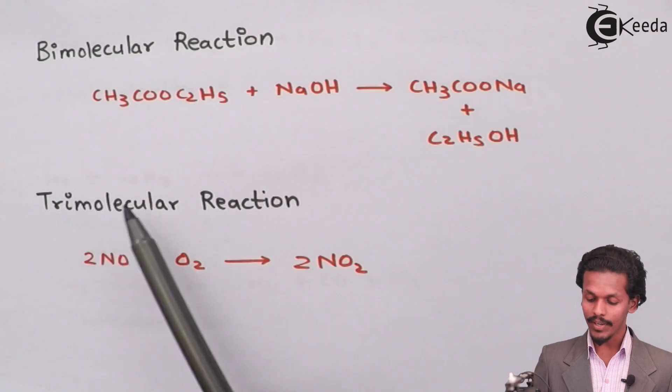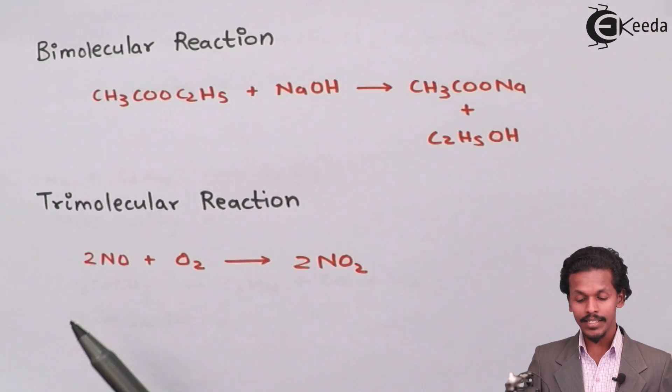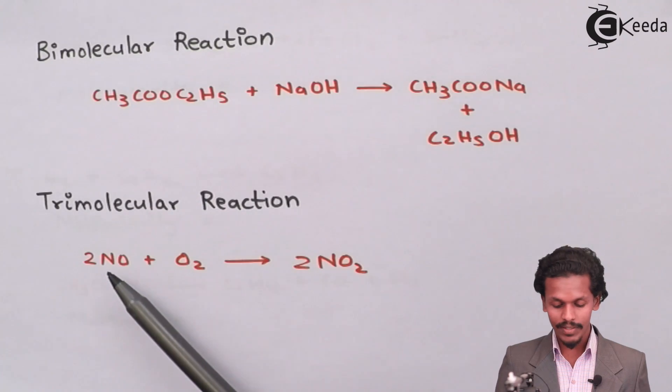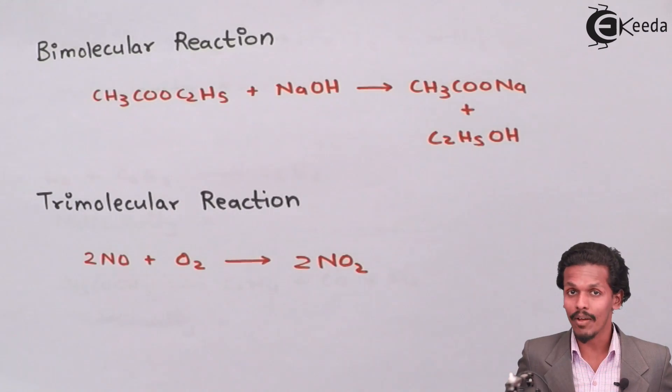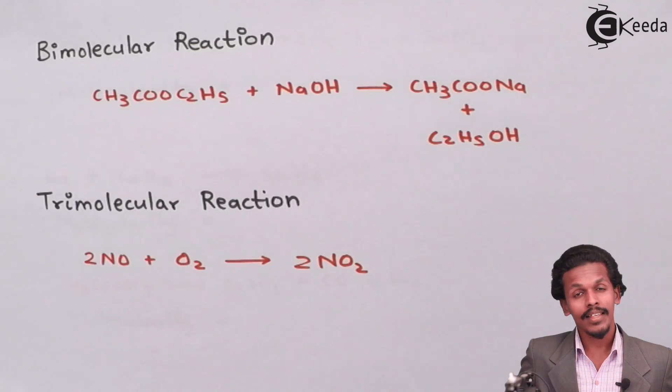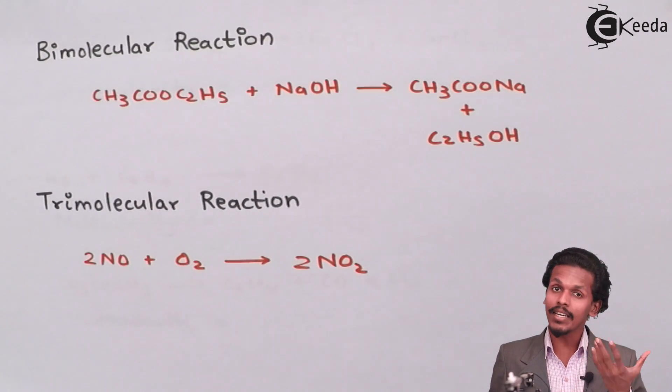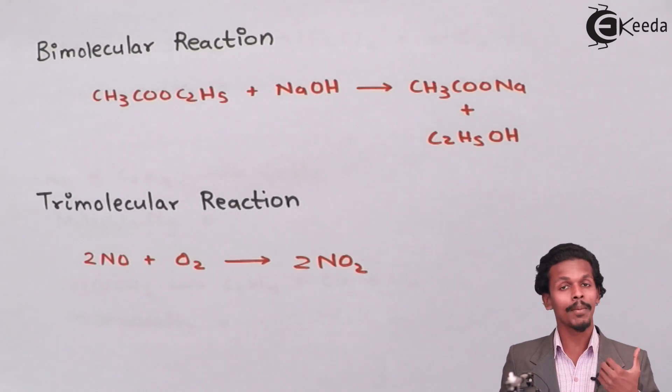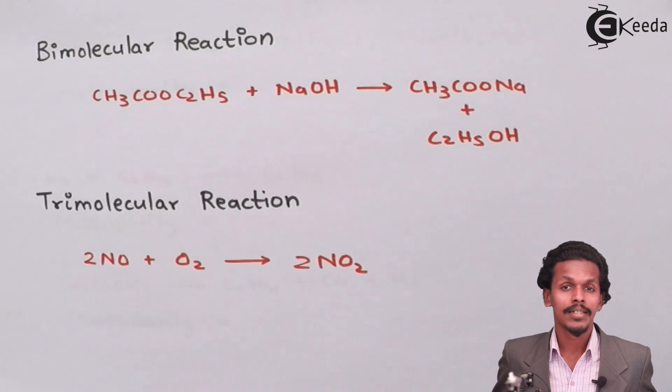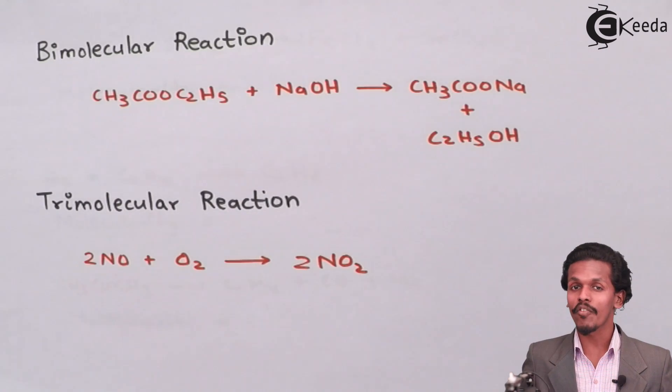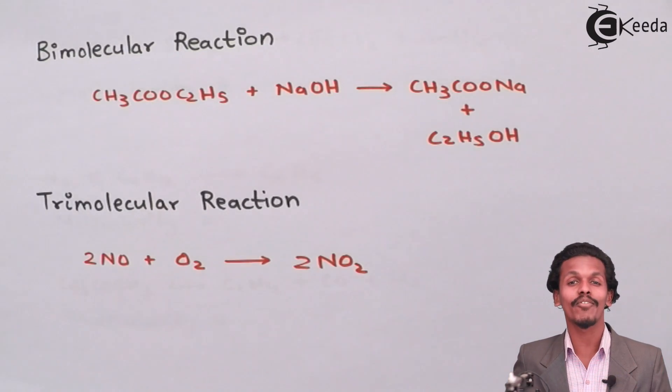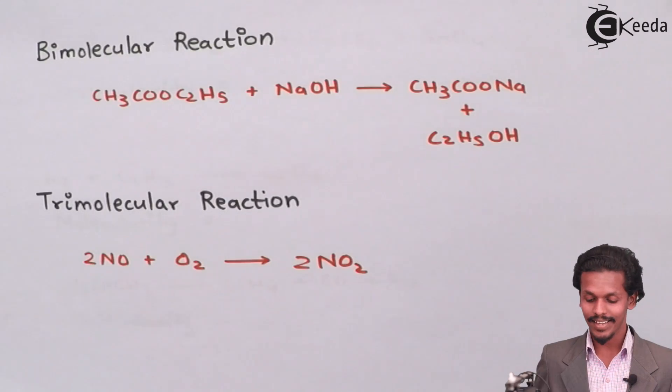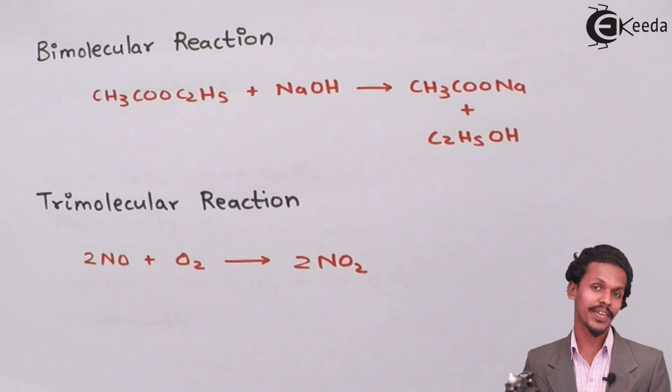Moving towards the next one that is for tri-molecular reaction. In this case, two times NO that is nitric oxide plus oxygen gives us two times nitrogen dioxide. In this case, the total number of reactant molecules or the total number of moles of reactants are two plus one, which makes three. So that's why the molecularity of this reaction is three and hence it is a tri-molecular reaction.